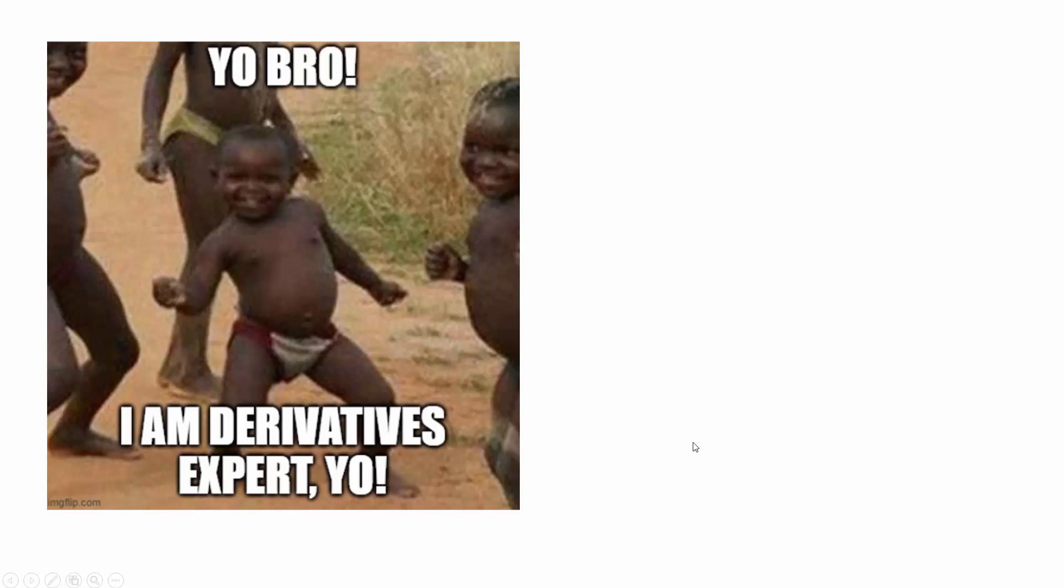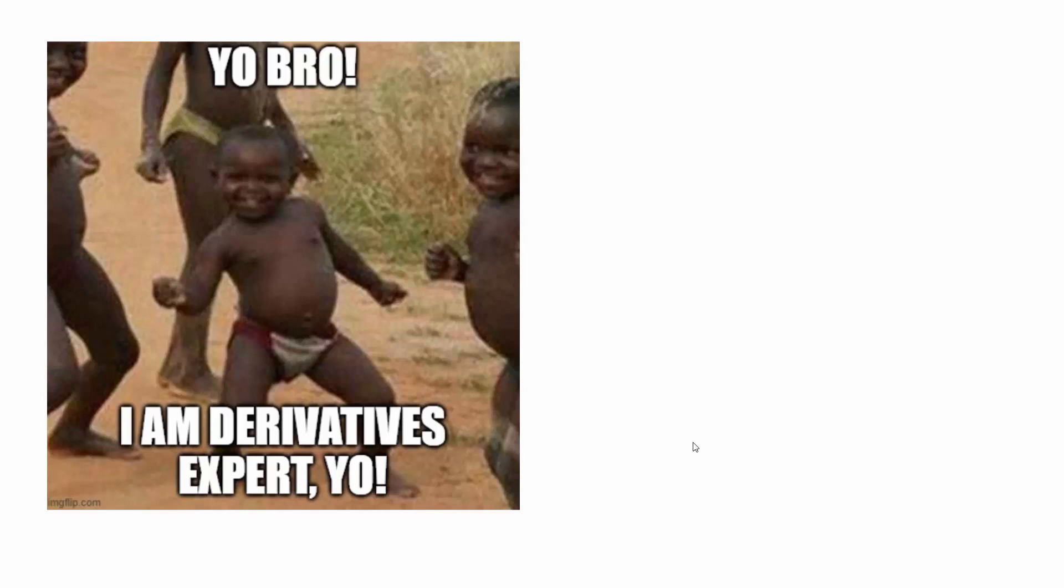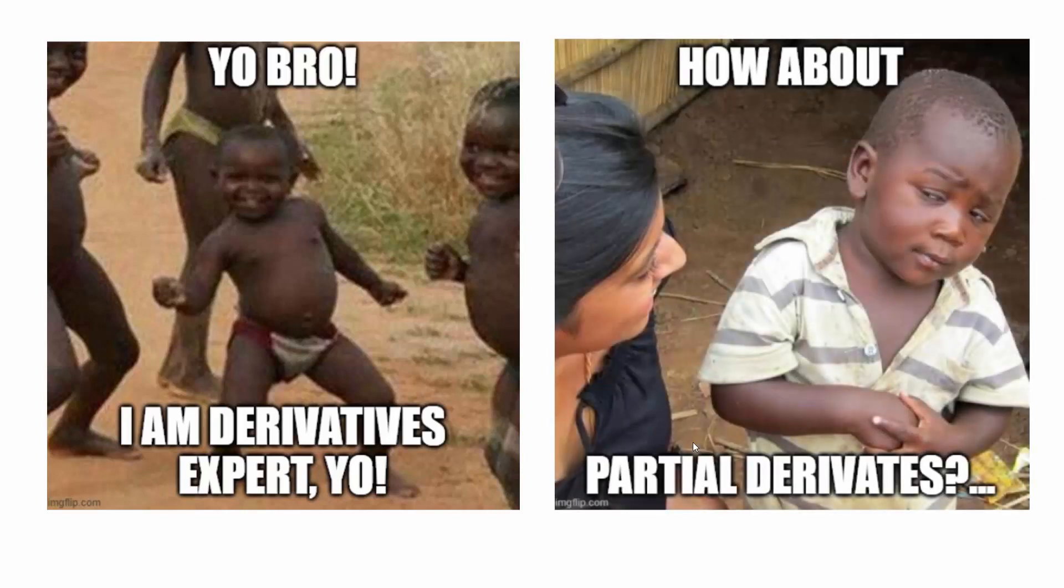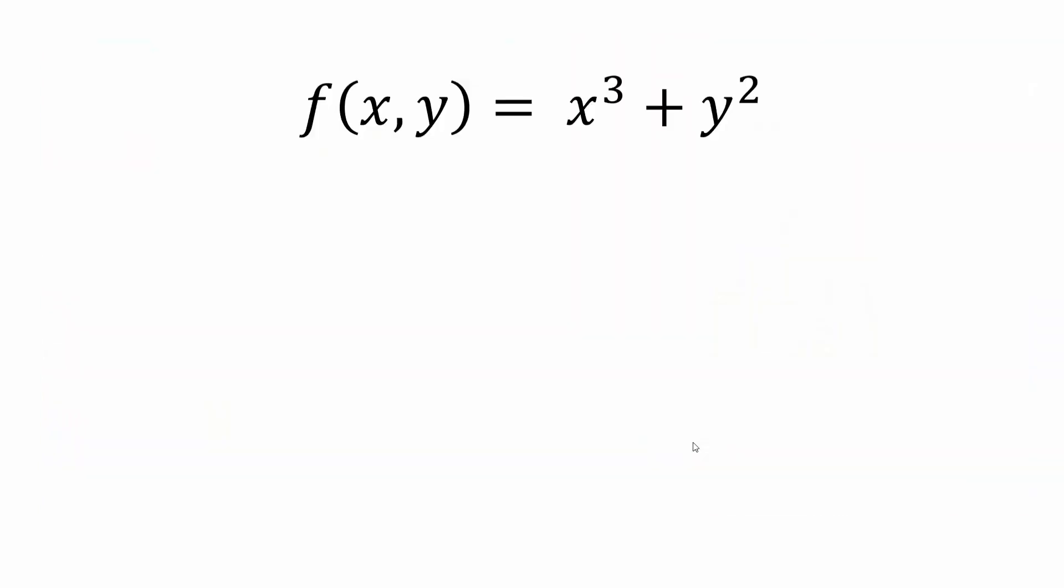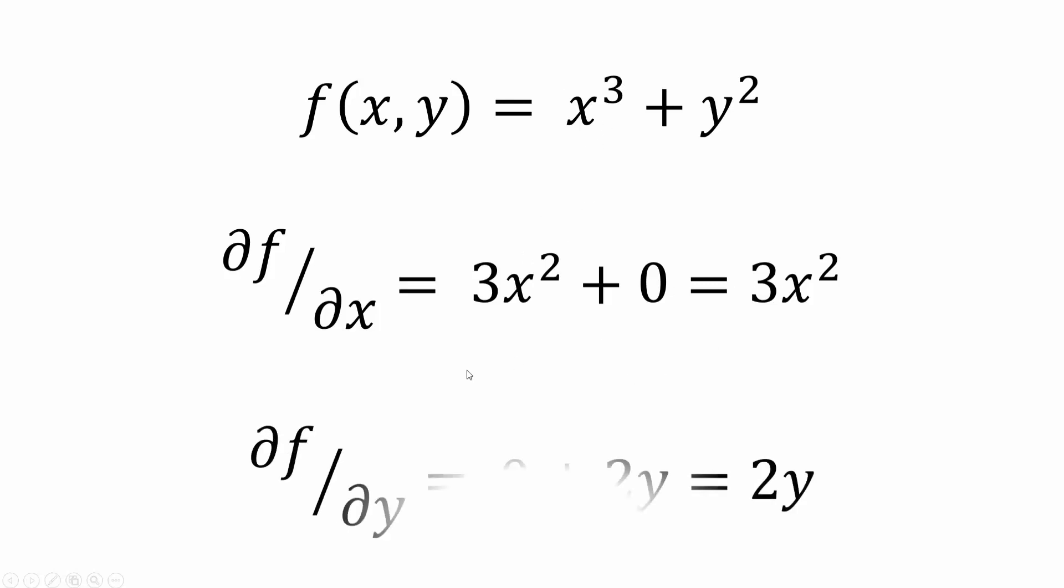Alright, now you're thinking, 'Bro, I know the derivative, I'm an expert.' But then someone might ask you about partial derivative. What exactly is partial derivative? Do not worry—partial derivative is as easy as derivative. When you have an equation like this where you have two variables x and y, to find the partial derivative of your function with respect to x, all you do is consider as if y doesn't exist, so you make that 0, and you find the derivative of x³, which will be 3x². So that's your partial derivative.